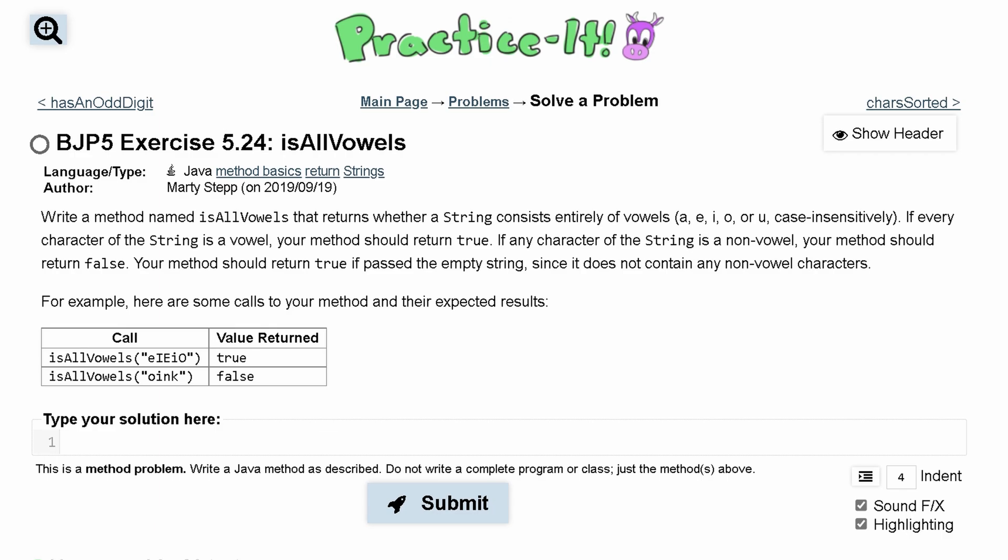Looking at practice exercise 5.24, isAllVowels, we're going to write a method. It's going to be public, and it's going to return true or false, so it has to be a boolean. It's called isAllVowels that returns whether a string consists entirely of vowels, case insensitive. So if every character of the string is a vowel, our method is going to return true. If anything is not a vowel, our method should return false.